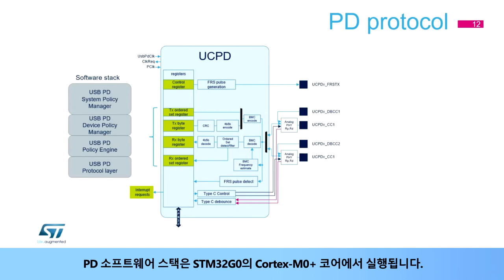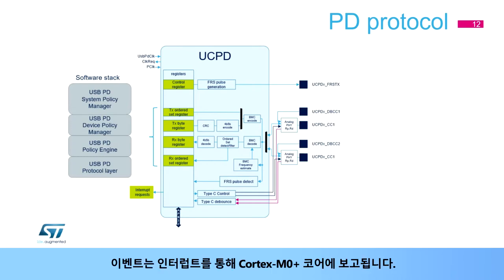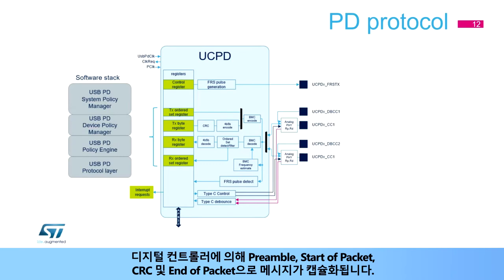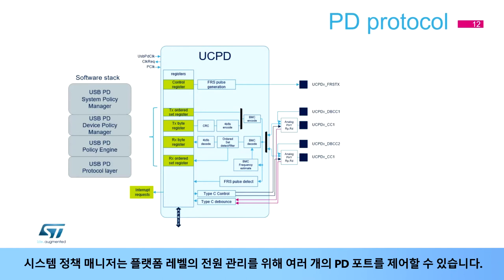The PD software stack is executed by the Cortex-M0+ Core in the STM32G0. It is based on messages and events; events are reported to the Cortex-M0+ Core through interrupts. Regarding messages, only the payload is under software control — the digital controller performs message encapsulation with preamble, start of packet, CRC, and end of packet. The software stack includes the protocol layer, the policy engine, the device policy manager, and the system policy manager. The system policy manager may control several PD ports in order to implement platform-level power management.